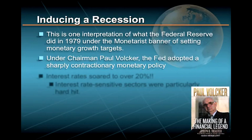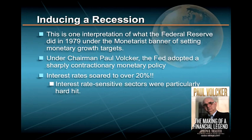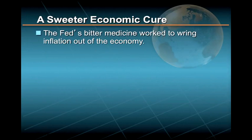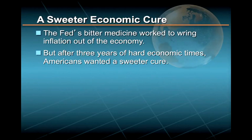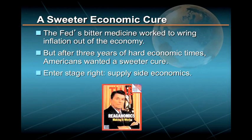Under Chairman Paul Volcker, the Fed adopted a sharply contractionary monetary policy, and interest rates soared to over 20%. Particularly hard hit were interest-sensitive sectors of the economy, like housing construction, automobile purchases, and business investment. While the Fed's bitter medicine worked, three years of hard economic times left a bitter taste in the mouths of the American people, now hungry for a sweeter macroeconomic cure than either the Keynesians or monetarists could offer. Enter Stage Right: Supply-Side Economics.